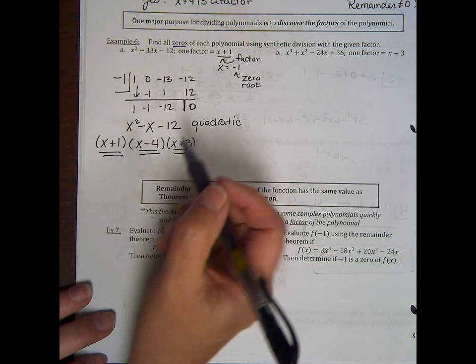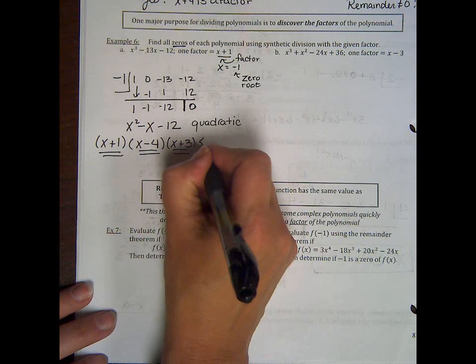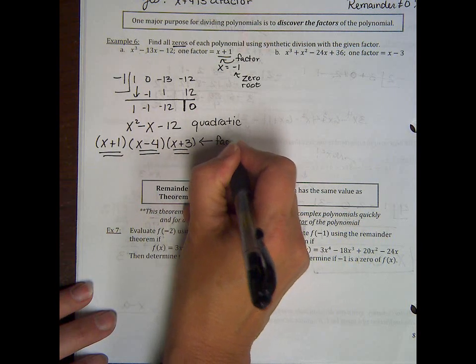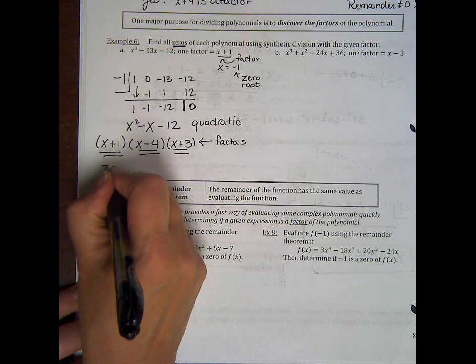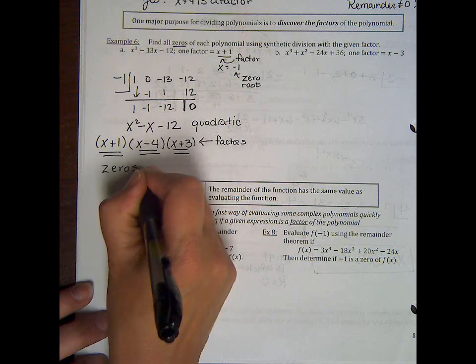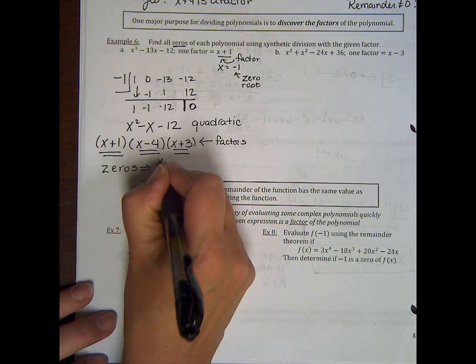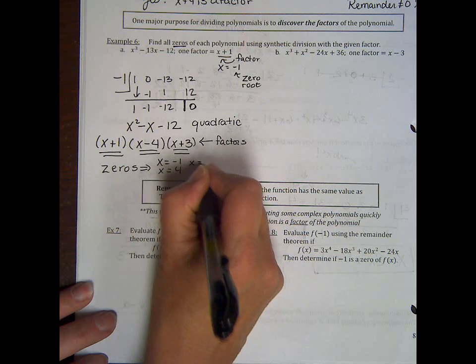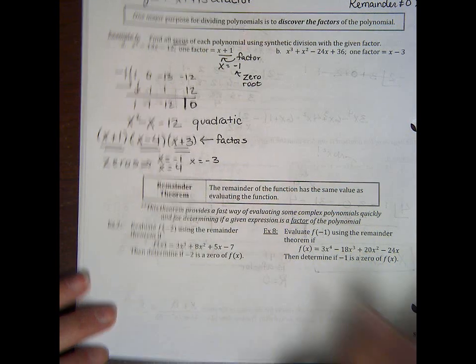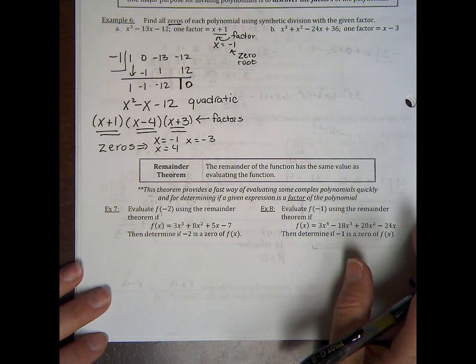But it didn't ask me to find the factors. Pay attention to what you're asked for. The factors are these three, but the roots or zeros, or what you're asked for, are x equal negative 1, x equals 4, and x equals negative 3, by setting each of those equal to 0.